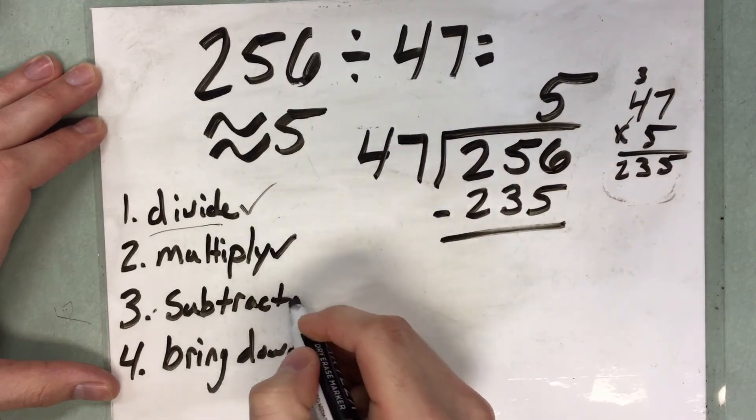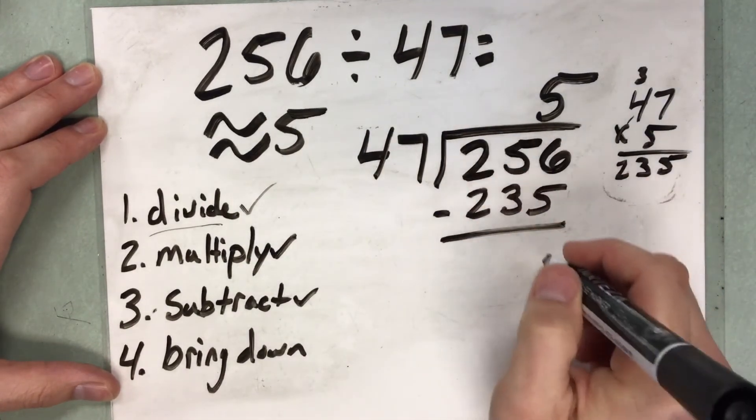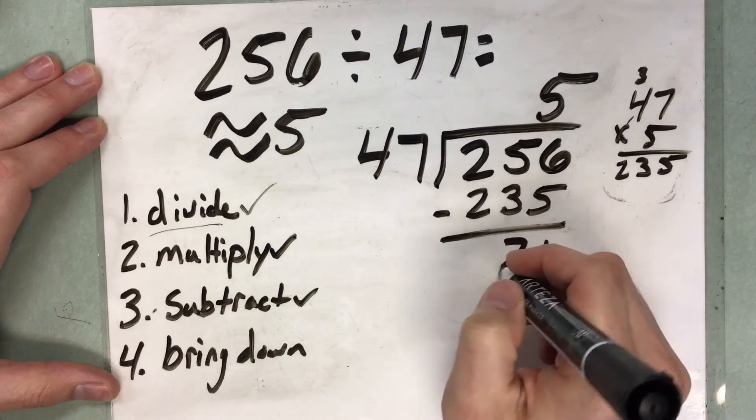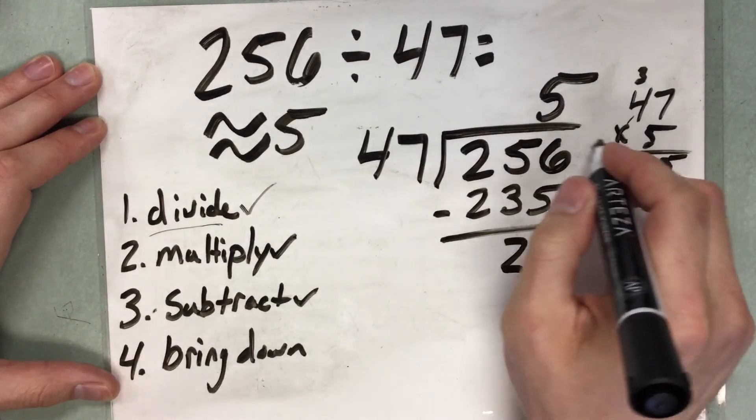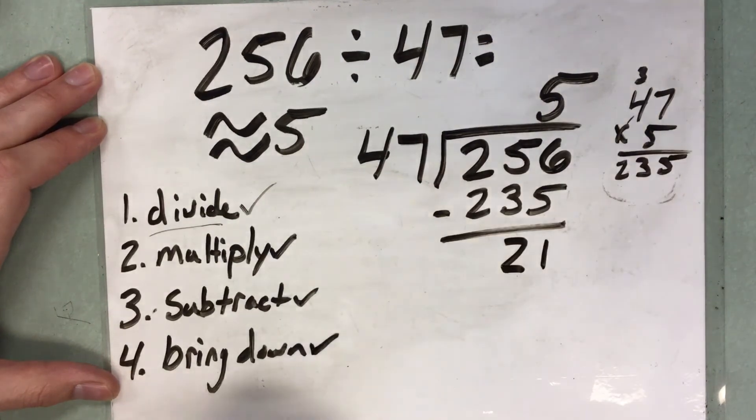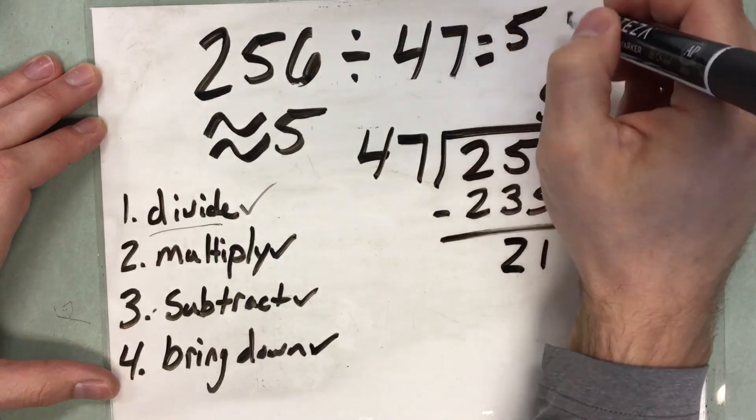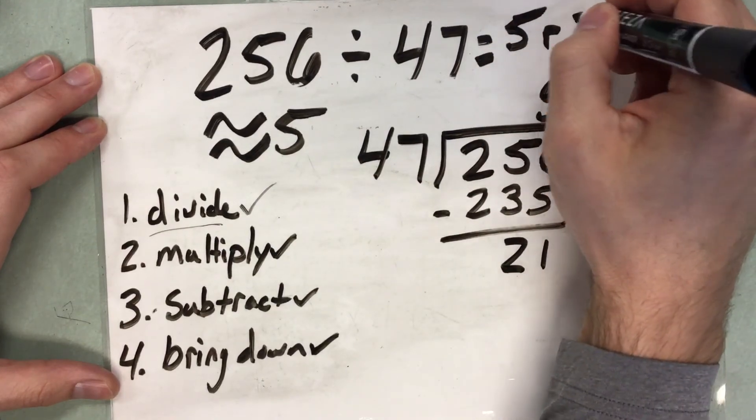Now I need to subtract. 256 minus 235. That would give you 21. I have nothing to bring down. So my answer is going to be 5 with a remainder of 21.